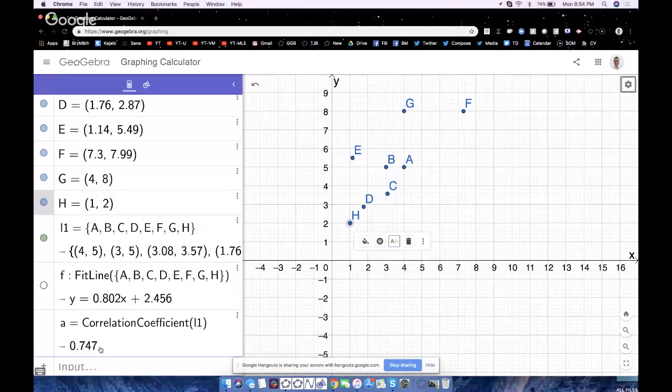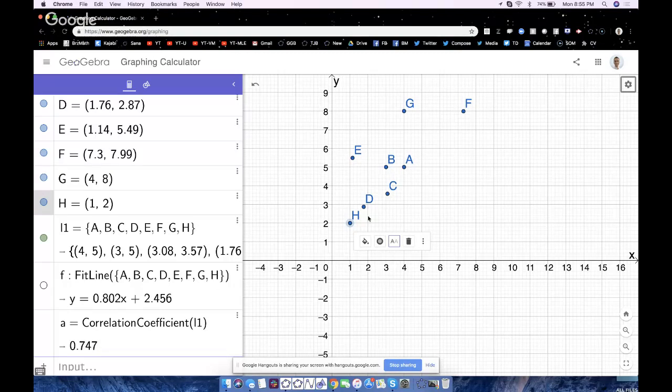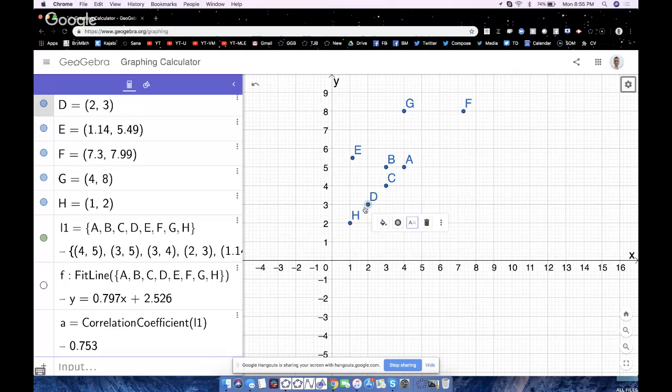And the goal here is to make that correlation coefficient as high as possible. One, two, three, go. And the students start working. Now, you math teachers know exactly where I'm going with this. What's the highest that value ever gets? We know is one. And when does it achieve that value? Well, when all the points are collinear.